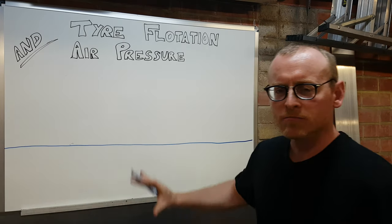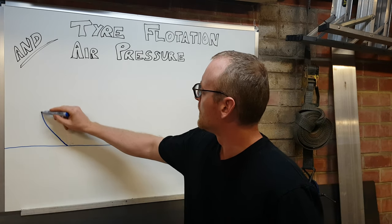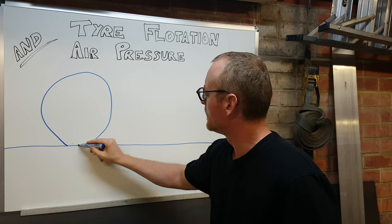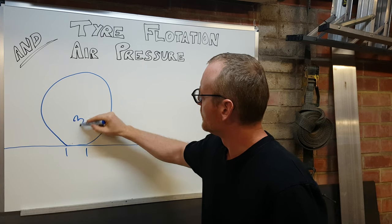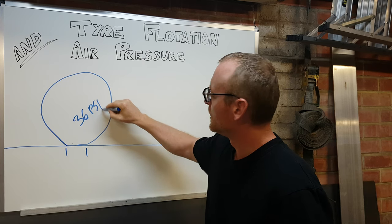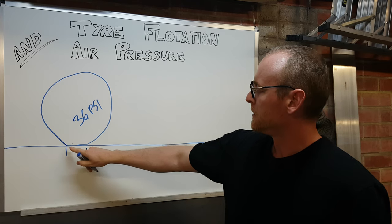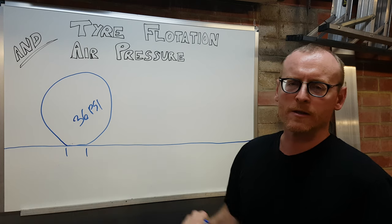This is the ground, let's call it asphalt. This is a tyre at 36 psi. This is the tread that's touching the ground, we call that the contact patch.